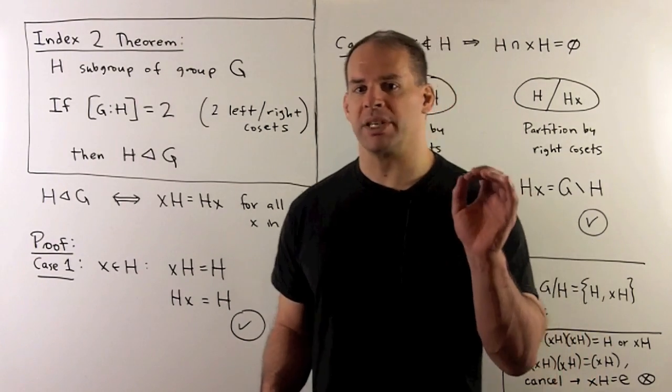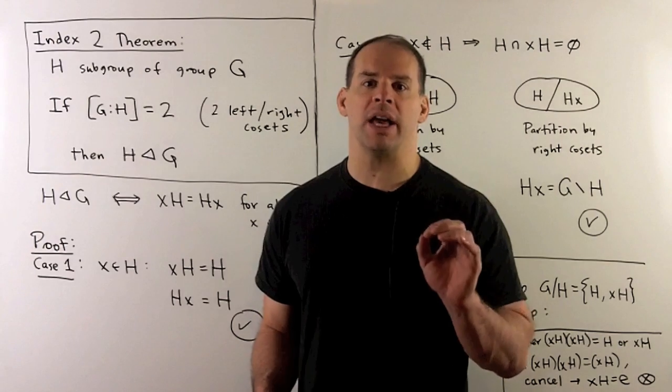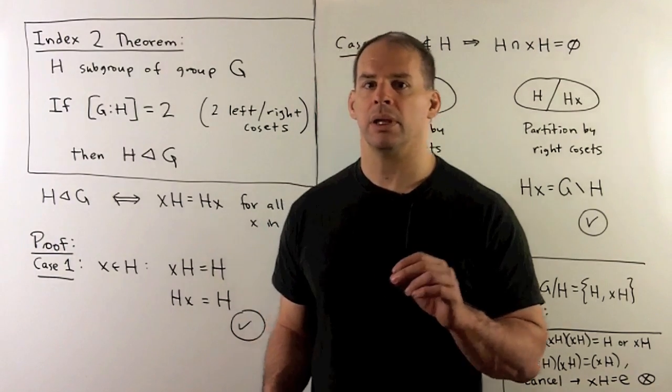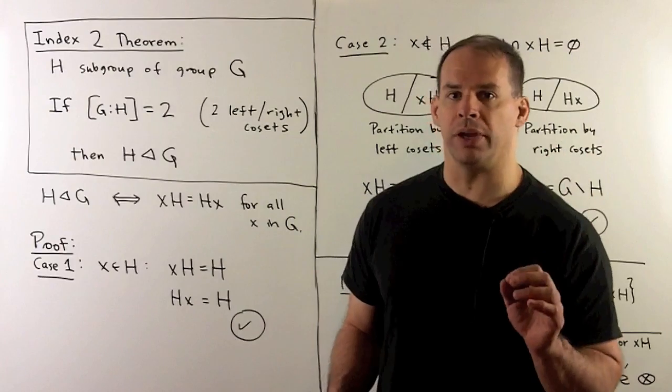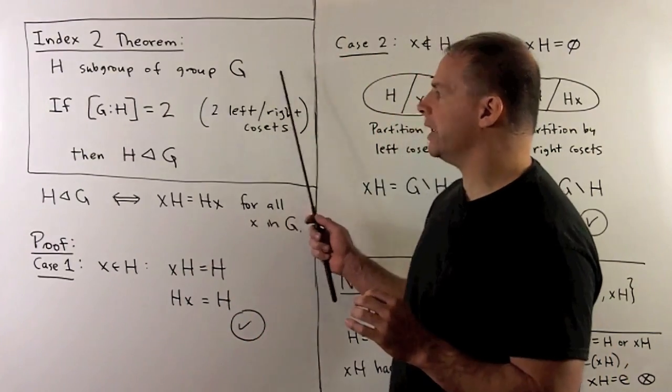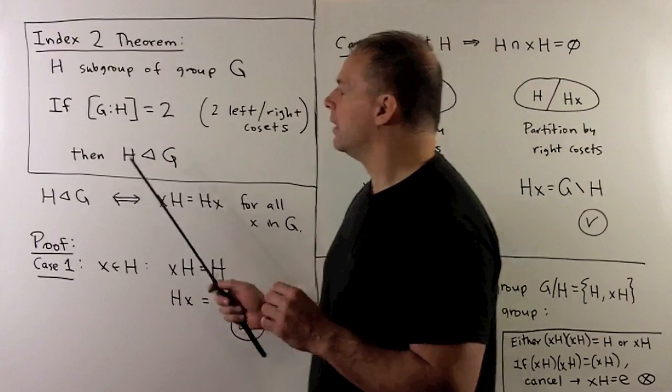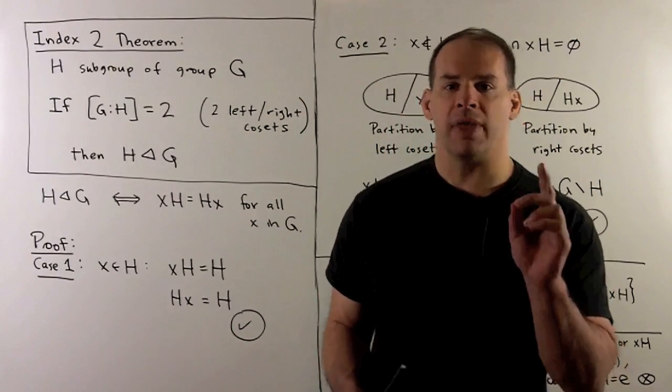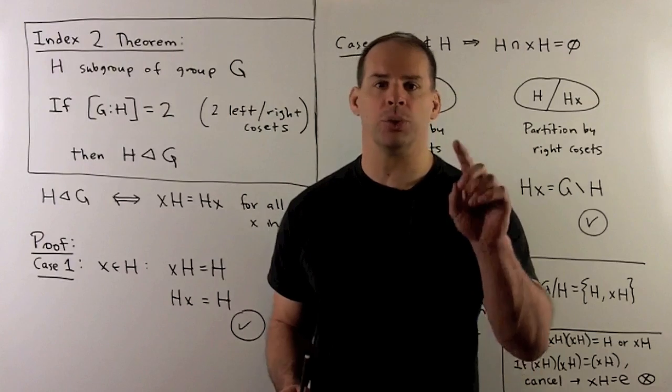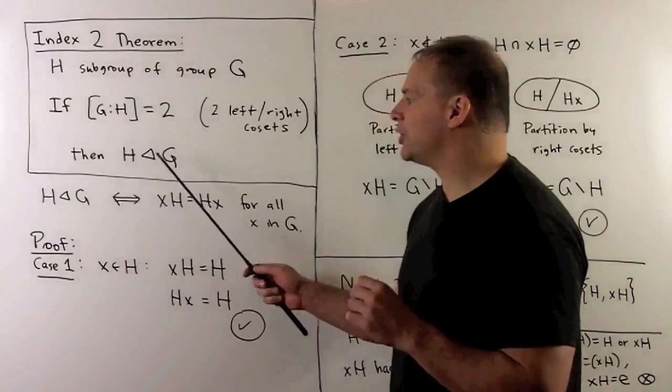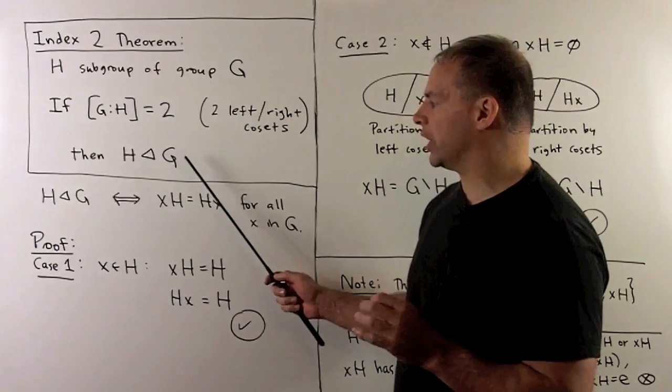Then we'll show some examples and identify a special class of examples called the dihedral group. First, the index 2 theorem. We have H, a subgroup of some group G. If the index of the subgroup H in G is equal to 2, so we have two cosets, either two left cosets or two right cosets, then H is automatically a normal subgroup of G.